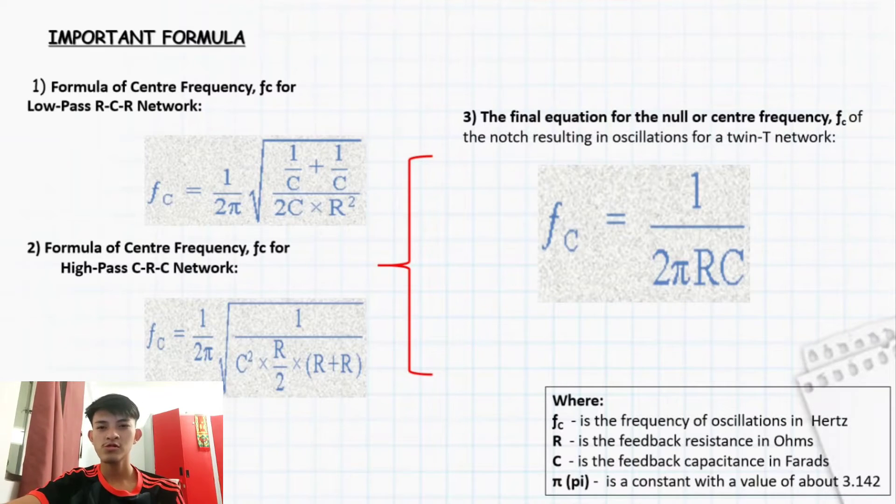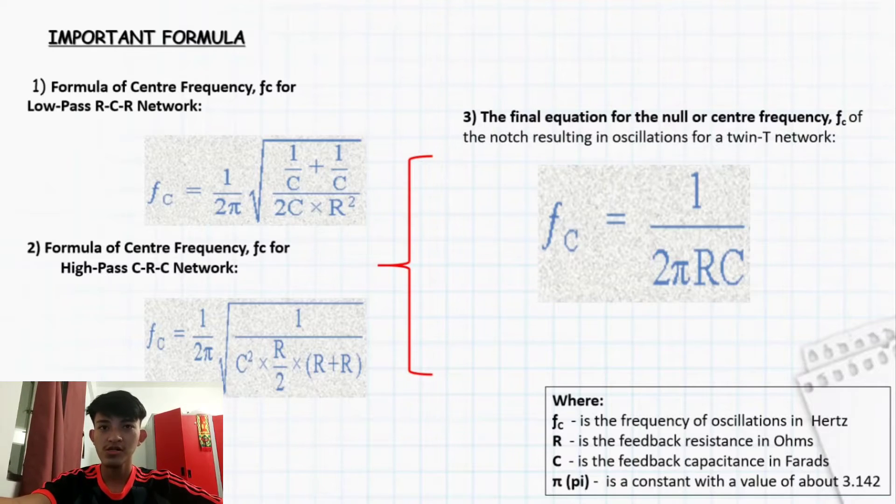Assalamualaikum warahmatullahi wabarakatuh. My name is Muhammad Elman Bin Mahzamani and I will explain about twin-T oscillator formulas. In this oscillator, we use formulas of center frequency that are obtained from notch response. We have three types of formulas: low-pass RCR network, high-pass CRC network, and the final equation for center frequency.